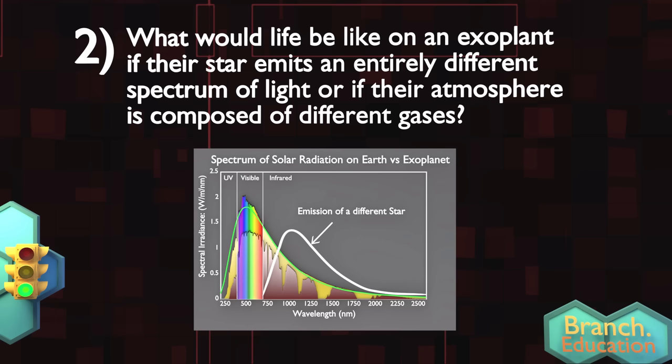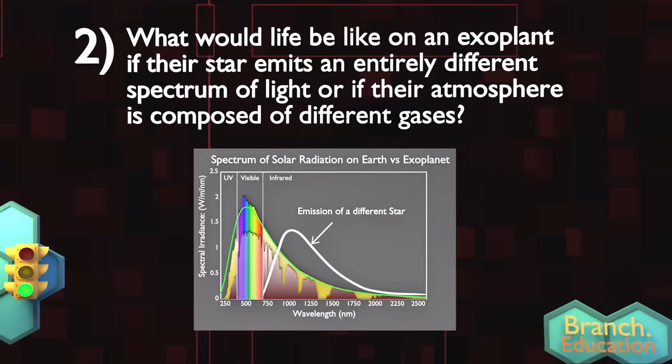Furthermore, what would life be like on an exoplanet if their star emits an entirely different spectrum of light, or if their atmosphere is composed of different gases? Tell me what you think in the comments.